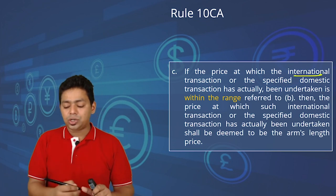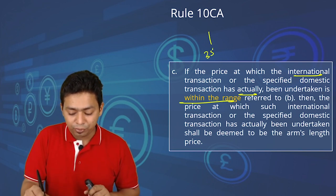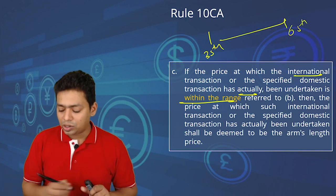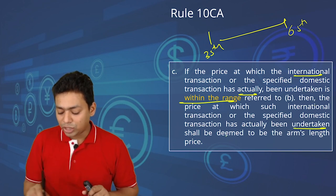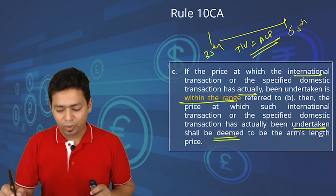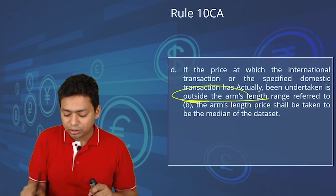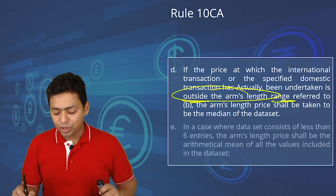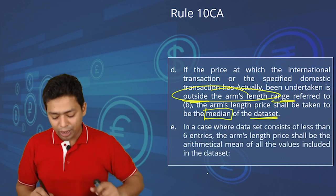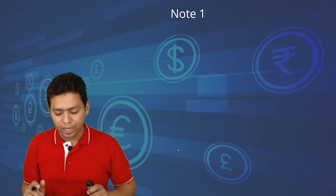If the price at which the international transaction or specified domestic transaction was actually undertaken falls within the 35th–65th percentile range, it shall be deemed to be the arm's length price — meaning your transaction value will not be challenged. But if the transaction price falls outside the arm's length range, we take the median of the data set, which is the 50th percentile value. For less than 6 entries, simply take the arithmetic mean.